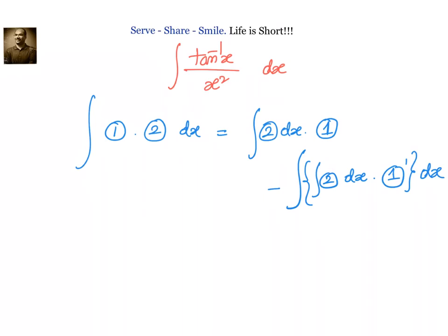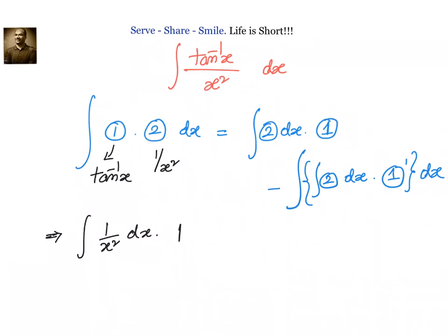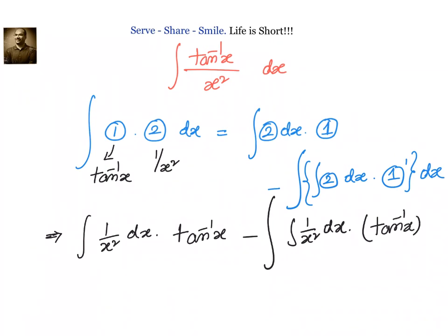To solve this problem, let us consider our first function as tan inverse x and the second function as 1 by x square, because we can integrate 1 by x square but we cannot integrate tan inverse x — however, we can differentiate tan inverse x. So our expression becomes: integral of 1 by x square dx, multiplied by tan inverse x, then minus the integral of the integral of 1 by x square dx, multiplied by the derivative of tan inverse x.